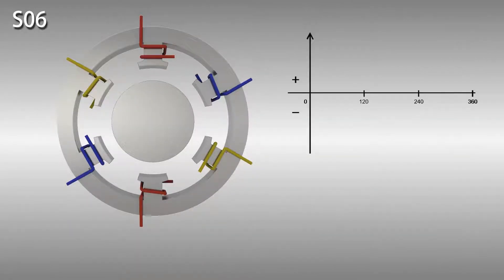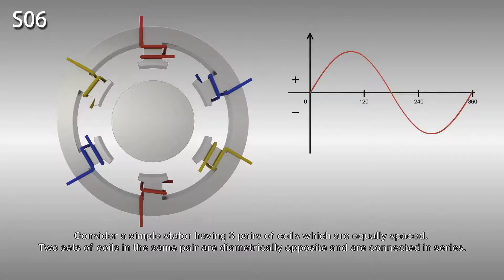The animation now explains the rotating stator magnetic field. Consider a simple stator having three pairs of coils which are equally spaced. Two sets of coils in the same pair are diametrically opposite and are connected in series.